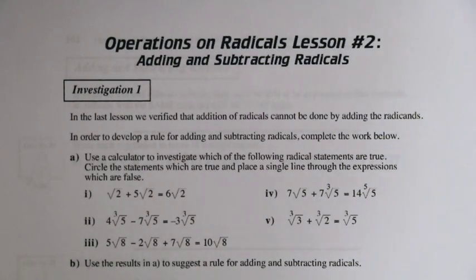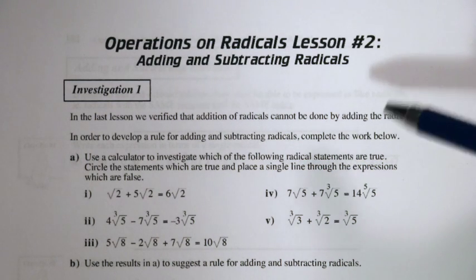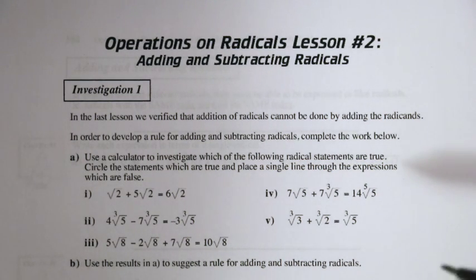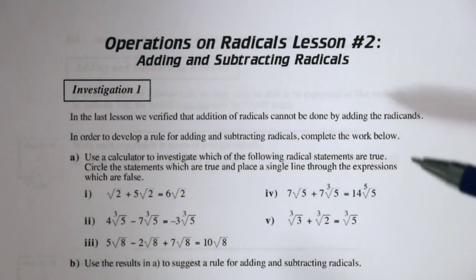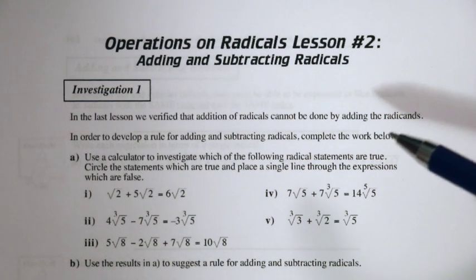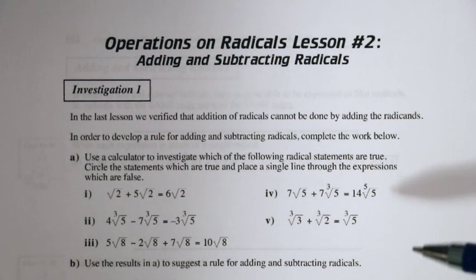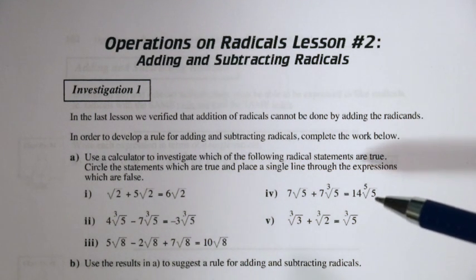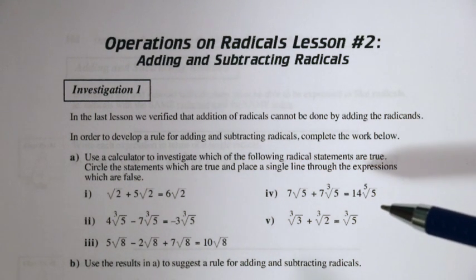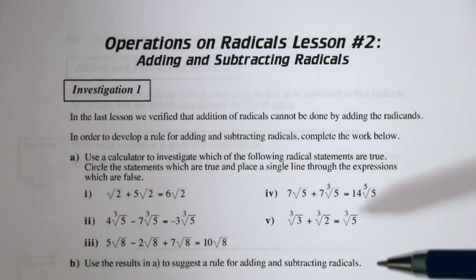We are talking about operations on radicals, lesson number two: adding and subtracting radicals. In the last lesson, we verified that the addition of radicals cannot be done by adding the radicands — you can't just add the radicands and get the answer. So we need to develop a rule for adding and subtracting radicals. Let's take a look at some of these examples.